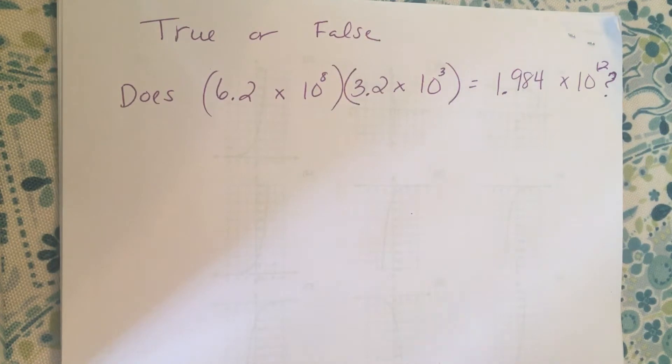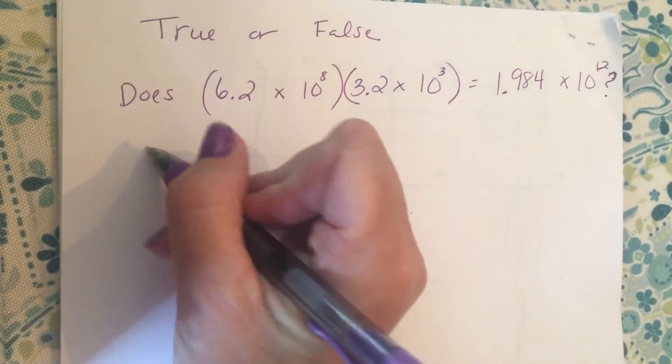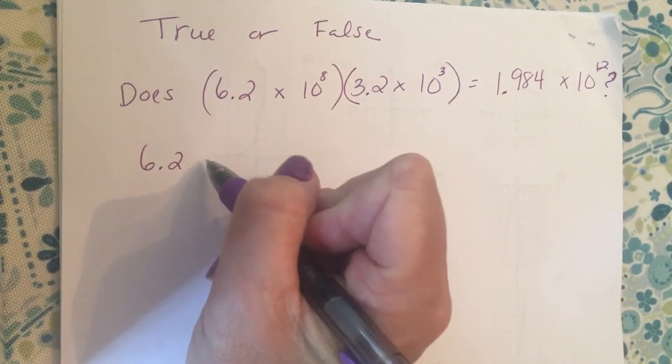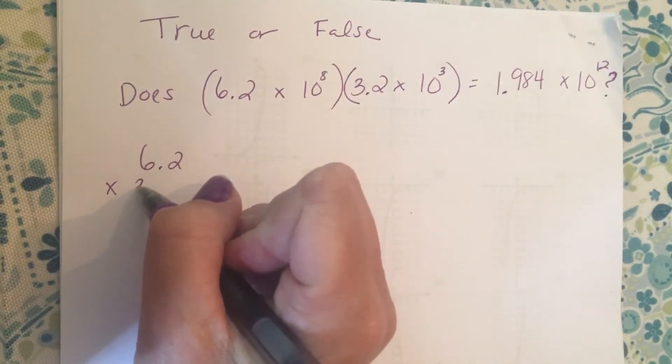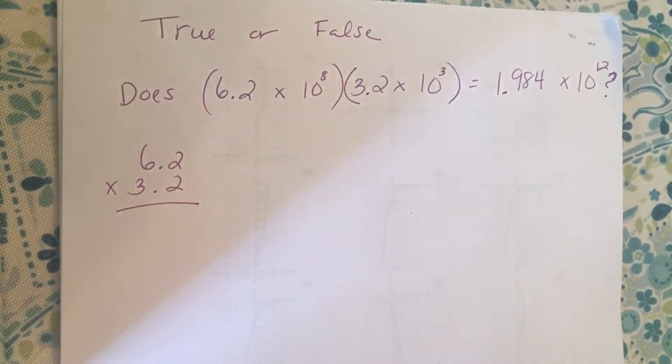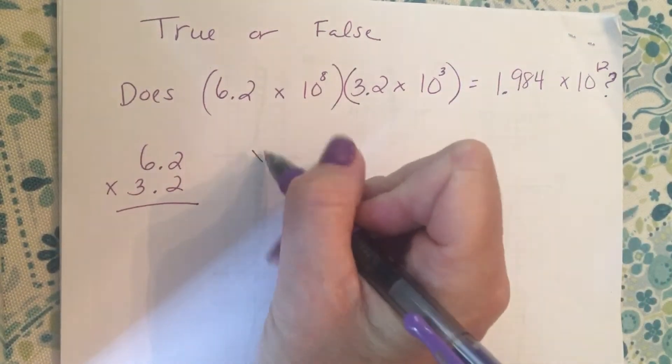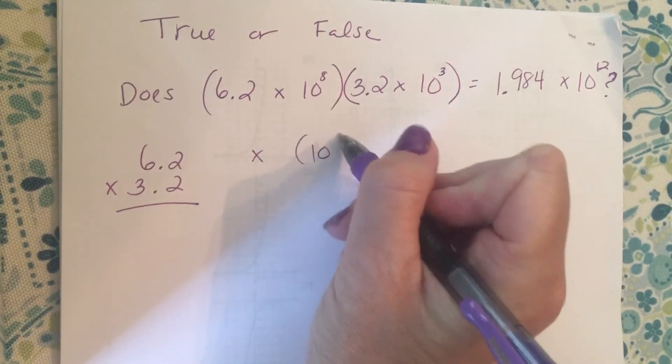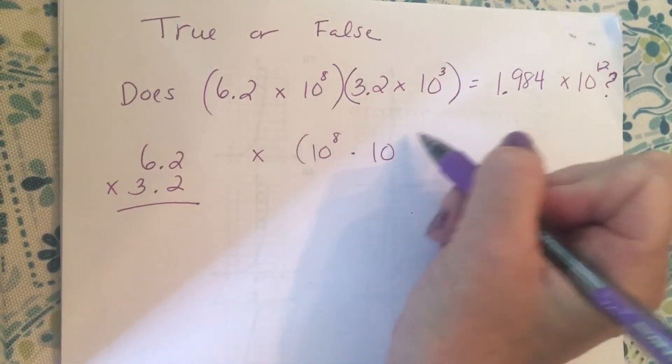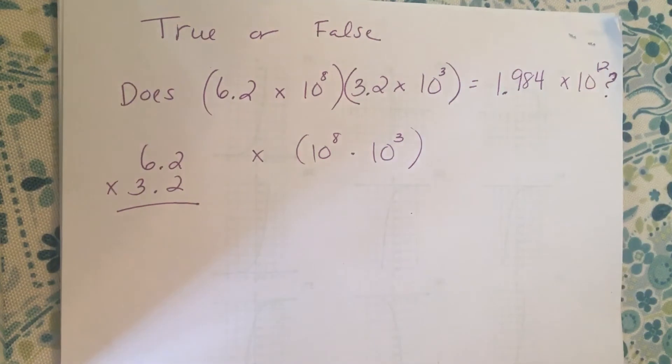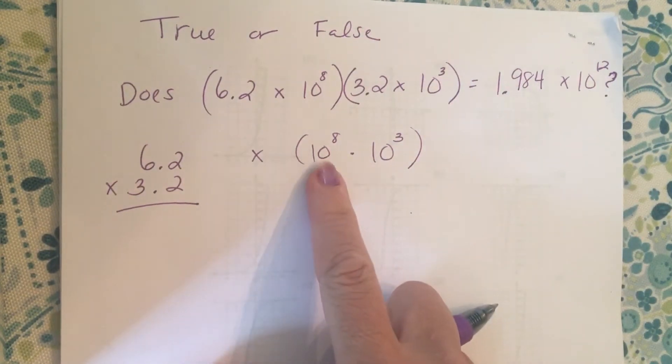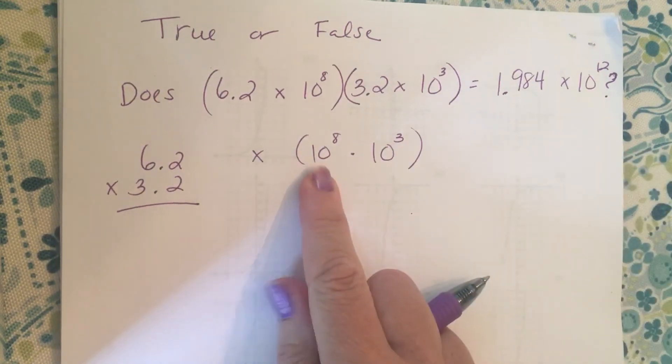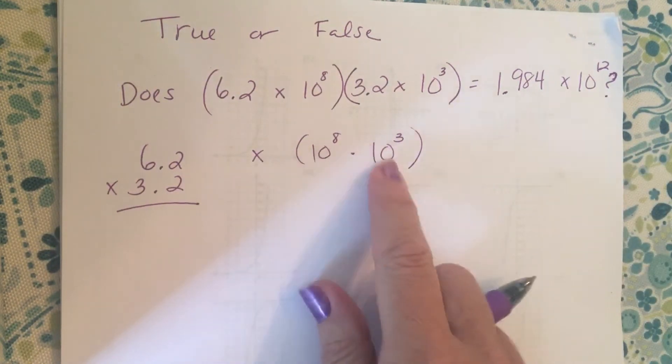Alright, so right away to get started, I'm going to separate my first terms. So I'm going to multiply 6.2 times 3.2, and then I'm going to multiply that by my powers of tens. That's 10⁸ times 10³. We talked about two weeks ago that when we multiply with the same base, we are allowed to add the exponents.